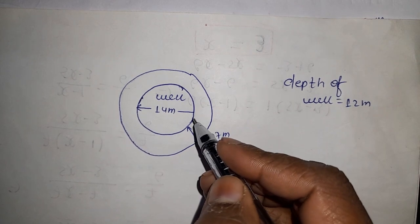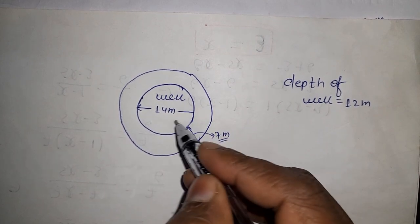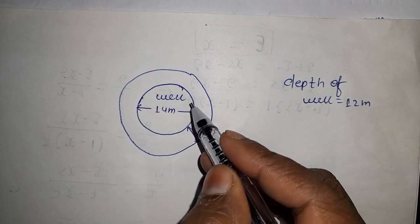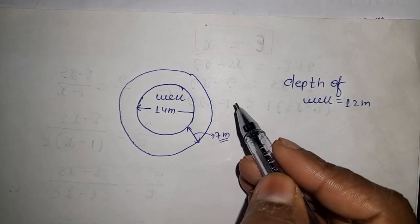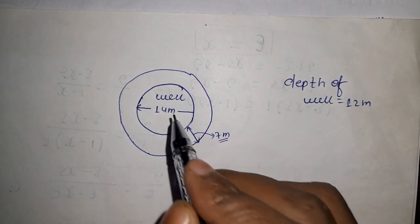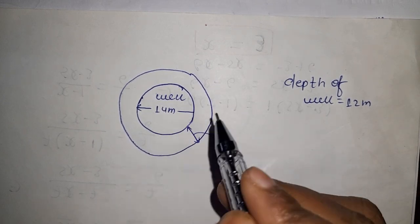Understand one thing: the well's volume will be equal to the volume of earth removed, because the earth came from the well itself. So volume of well equals volume of earth taken out.